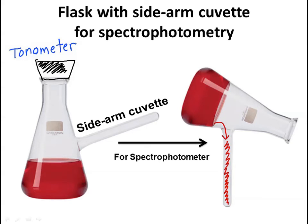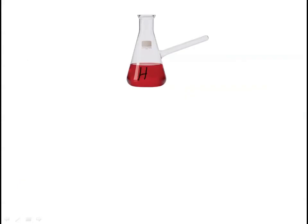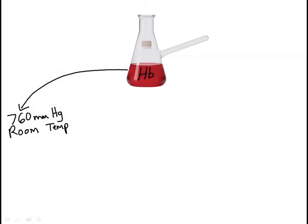You'll be provided with a hemoglobin sample at ambient air pressure — 760 millimeters of mercury — and room temperature. This sample is considered to be oxygenated. You will briefly and gently agitate the sample and then read the absorbance at 660 nanometers on the spectrophotometer. In the hemoglobin saturation calculation given in LabTutor, this absorbance value is C. The C term in the equation is the absorbance of the fully oxygenated hemoglobin.